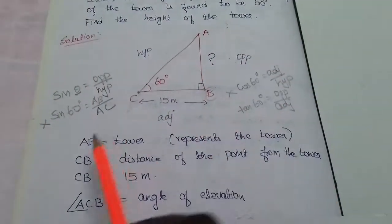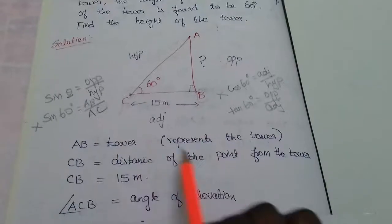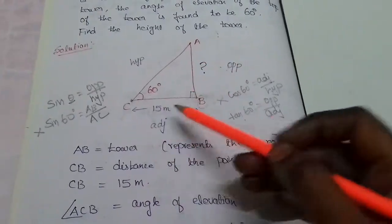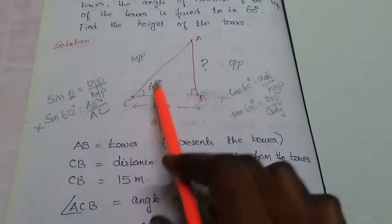If we assume the points in the same way, we consider AB to the tower, CB to the distance of the point from the tower, that is 15 meters. So angle of elevation ACB, that is angle of elevation, so angle C is equal to 60 degrees.